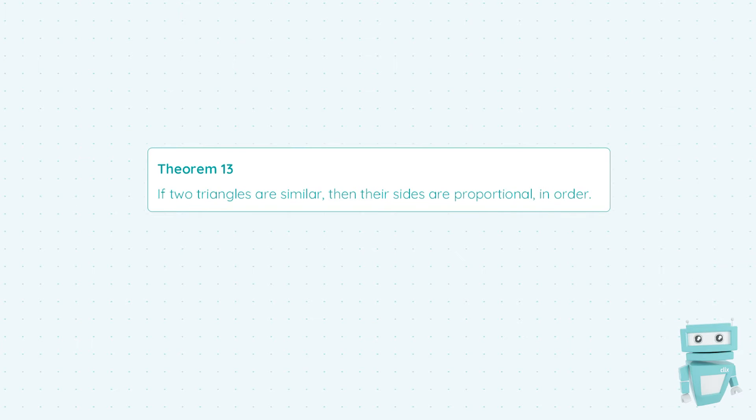Hi guys, Sean here from StudyClicks and in this video we're going to be taking a look at Theorem 13. So this theorem states that if two triangles are similar then their sides are proportional in order.